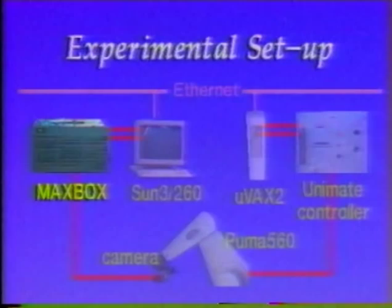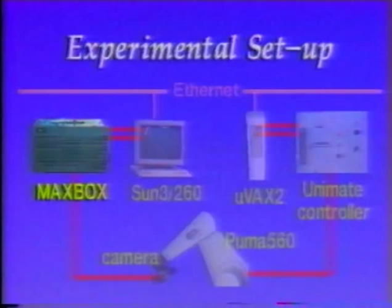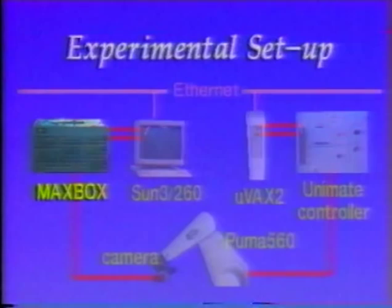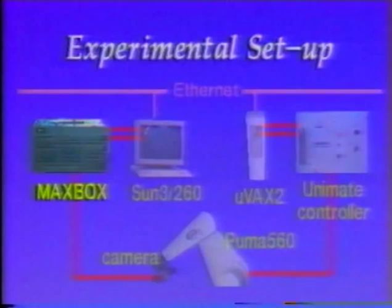The most important part of the system is a binary image processing board set that performs single-pass connectivity and generates parameters such as zero to second moments, perimeter, and bounding box for all connected regions in the scene at video rates. Parameters are computed in parallel by eight arithmetic units implemented in custom gate arrays, and kept in onboard dual-port memory for host access.